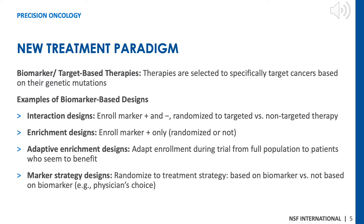With expanding knowledge in tumor biology and biomarkers, oncology therapies are increasingly moving away from a one-size-fits-all approach. Advances in genomics, particularly in tumor sequencing, have improved our ability to differentiate cancers by their genetic mutations, fueling efforts toward precision oncology, in which therapies are selected to specifically target cancer based on genetic mutations. Examples of biomarker-based study designs include the interaction design, enrichment and adaptive enrichment design, and marker strategy design.